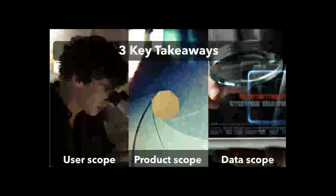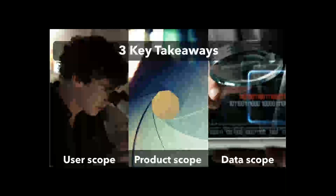So to recap, we went over the three scopes. The user scope: who are our users and what are their biggest pain points? The product scope: what's the minimum functionality needed to solve these problems? And the data scope: what data is necessary to answer those questions? And then ultimately, you'll be collecting feedback, iterating — not building the perfect product to start. Whatever works, take that and then build from there.